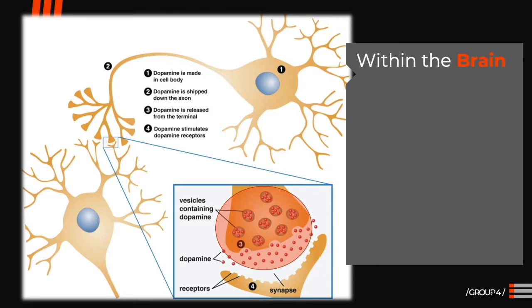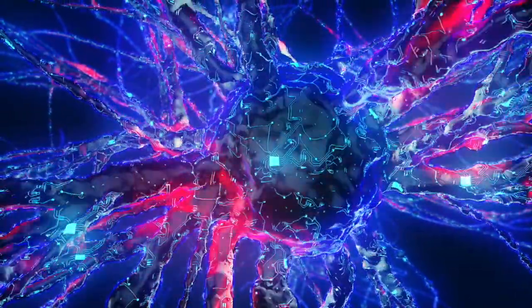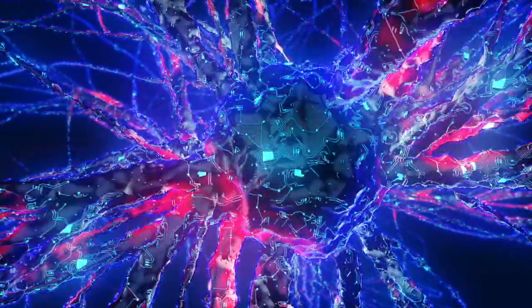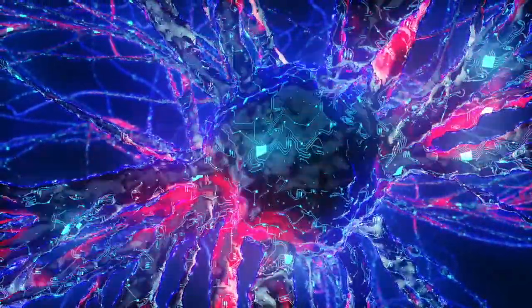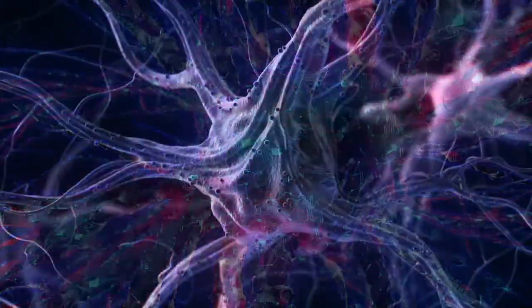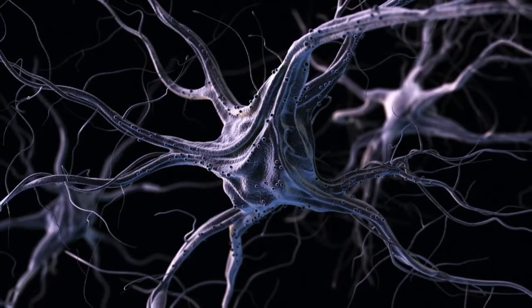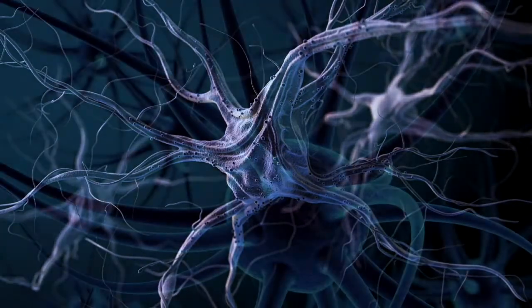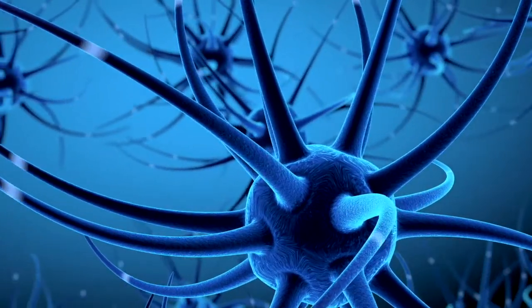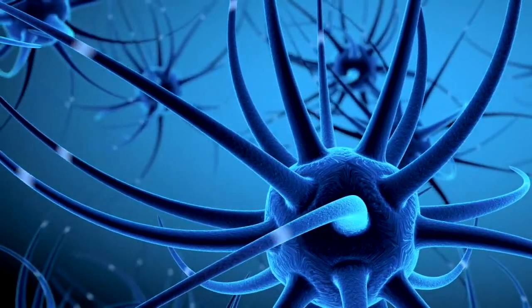Neurons communicate with one another through chemical messengers called neurotransmitters. The neurotransmitters cross a tiny gap, or synapse, between neurons and attach to receptors on the receiving neuron. Some neurotransmitters are inhibitory — they make it less likely that the receiving neuron will carry out some action. Others are excitatory, meaning they stimulate neuronal function, prompting signals to other neurons. Neurons are organized in clusters that perform specific functions described as networks or circuits. Some networks are involved with thinking, learning, emotions, and memory. Other networks communicate with muscles, stimulating them into action.